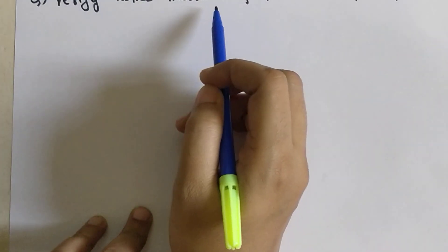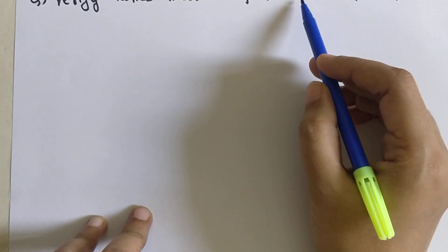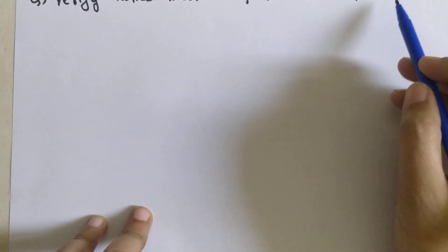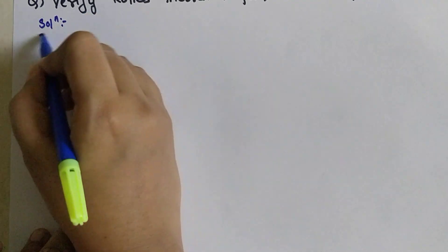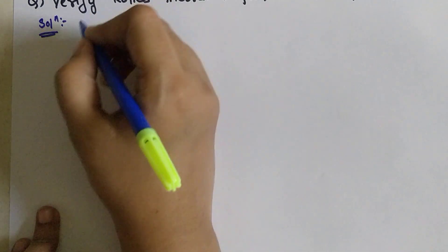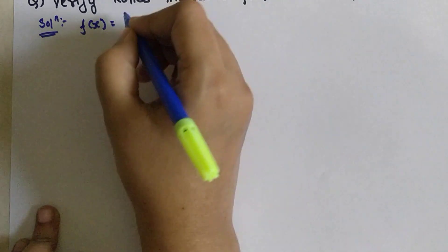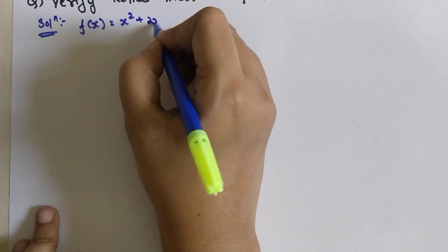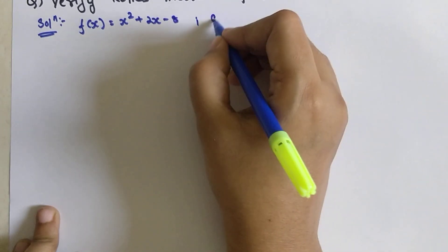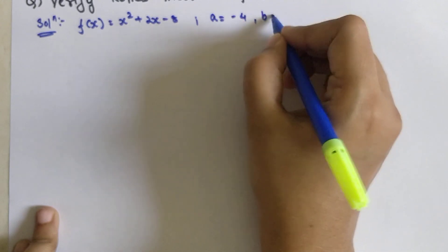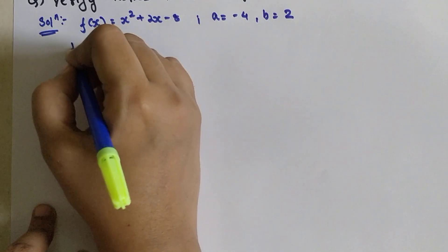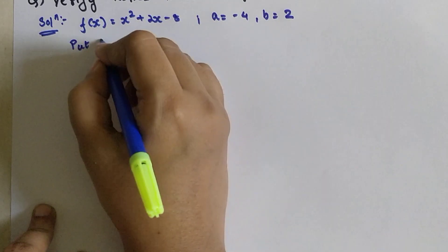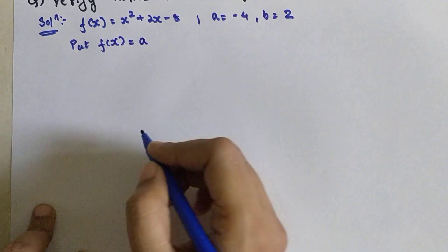Now let's start with the first example. The question is: verify Rolle's Theorem for f(x) = x² + 2x − 8 in the interval [−4, 2]. We write down f(x) = x² + 2x − 8, with a = −4 and b = 2.